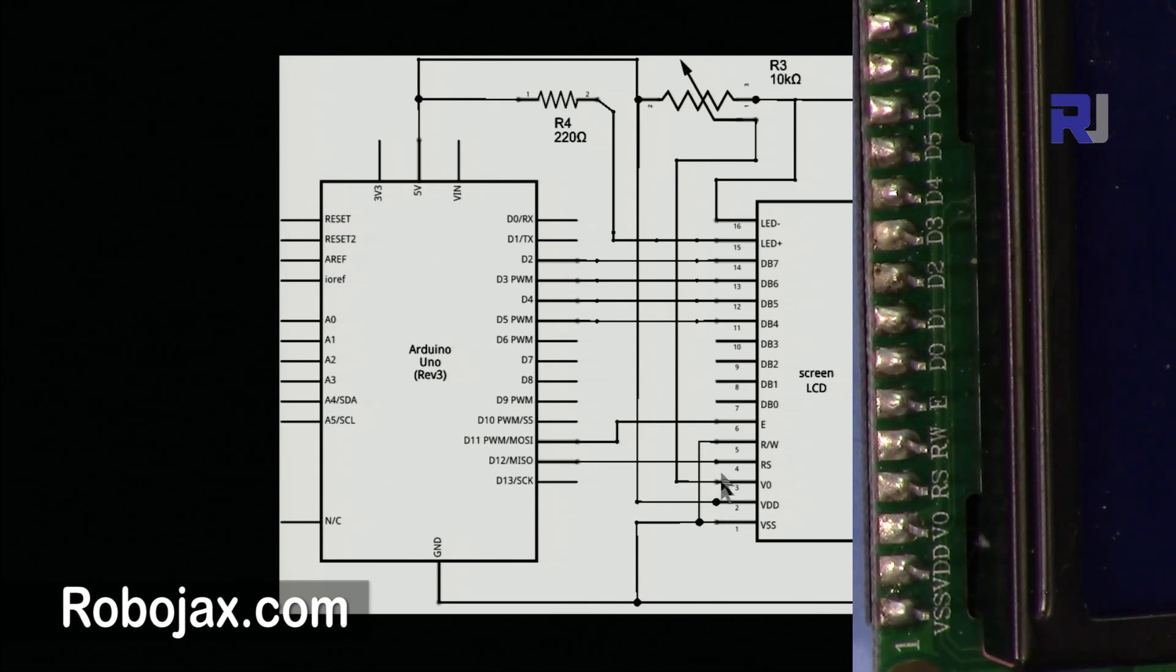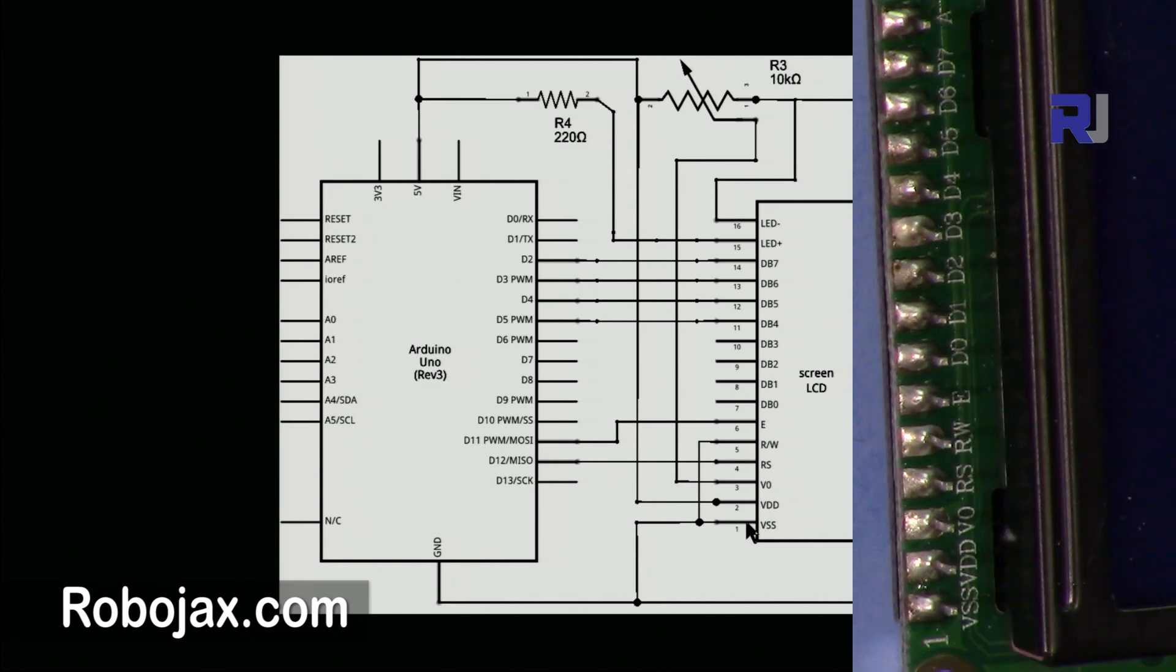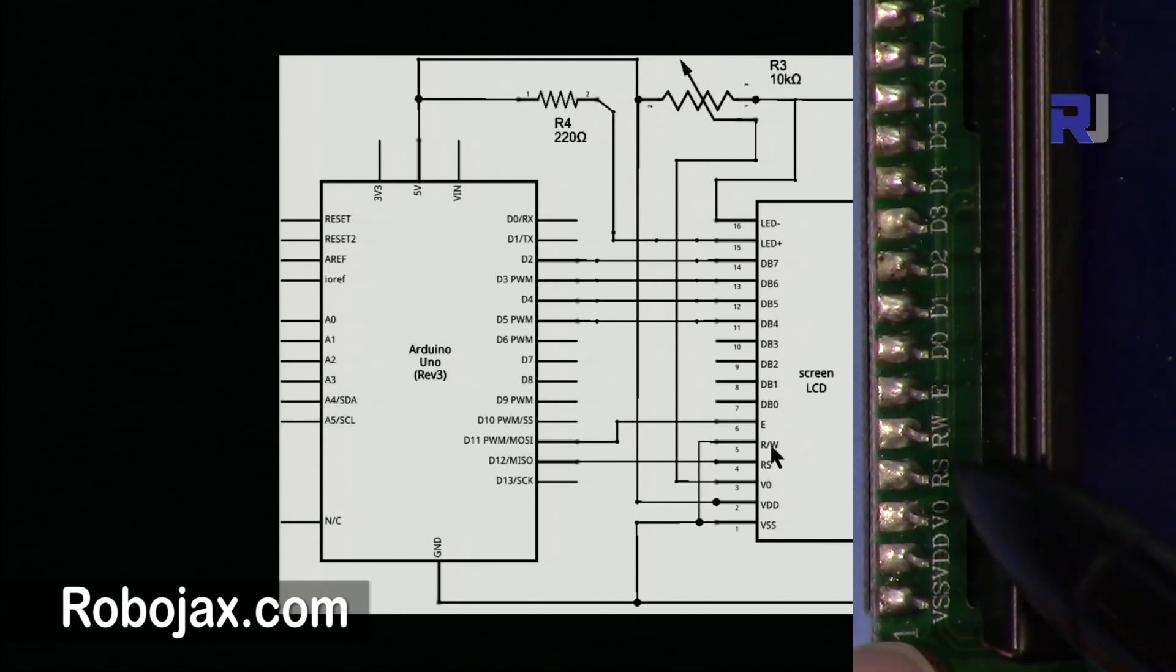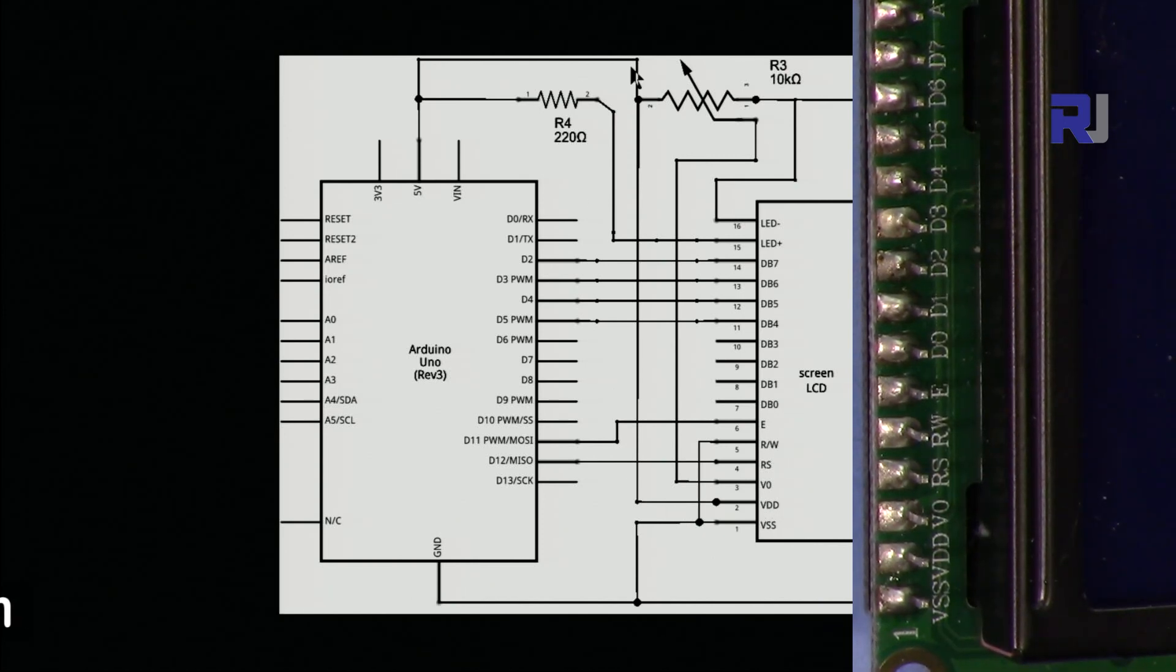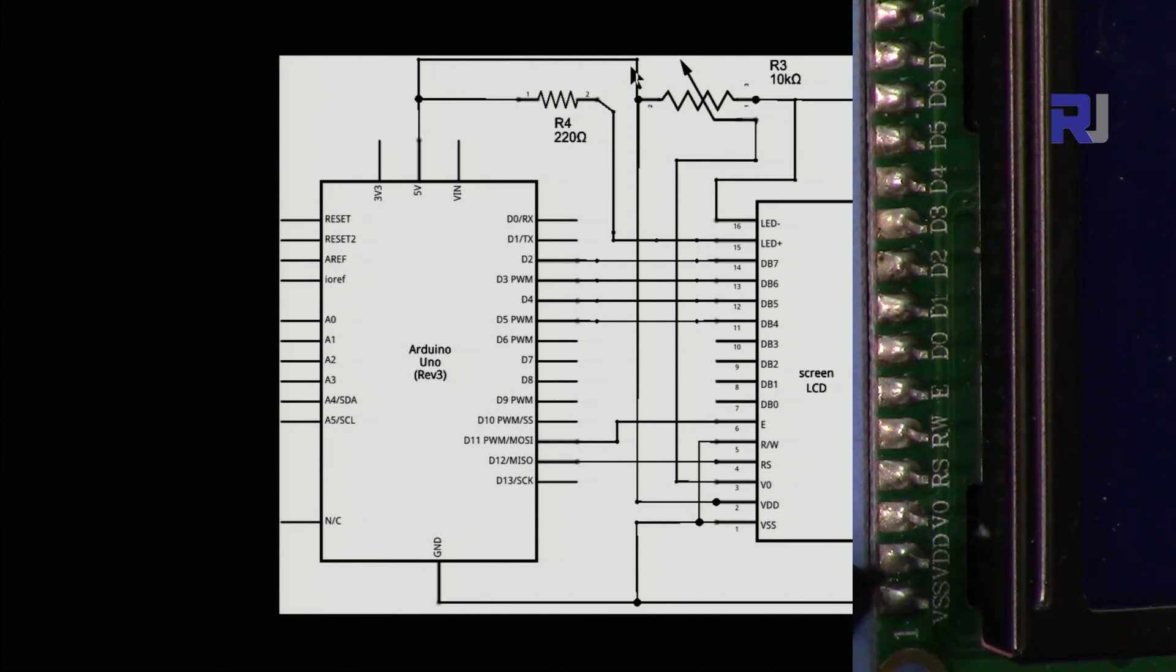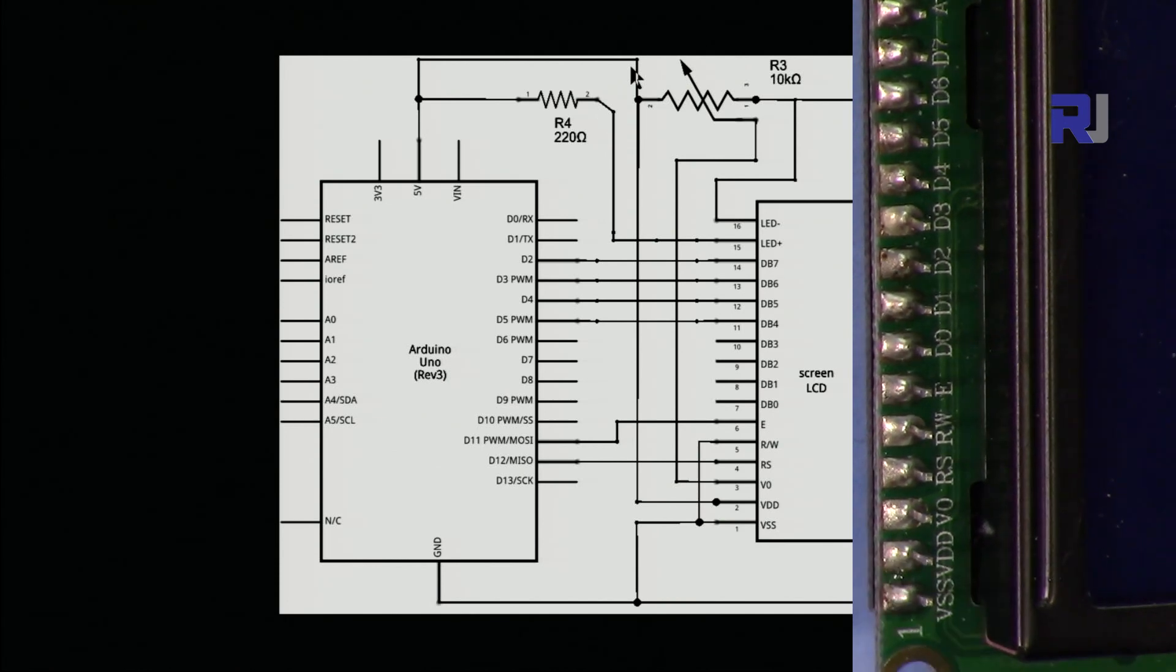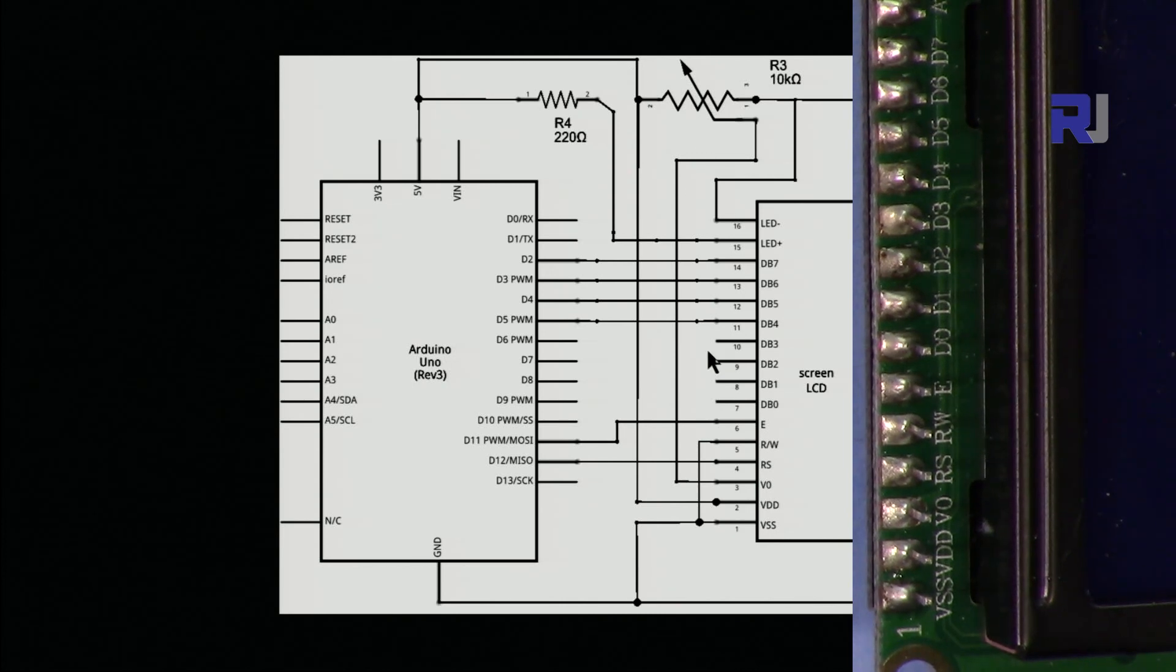Here, they're all mentioned. This is the LCD. We have VSS, which is the last one, will be connected to ground. VRW will be connected to ground, and VDD will be connected to 5 volts. The E will be connected to digital pin 11, and RS will be connected to 12.